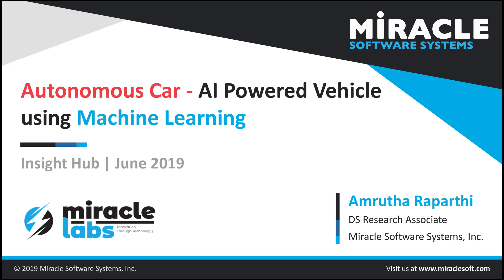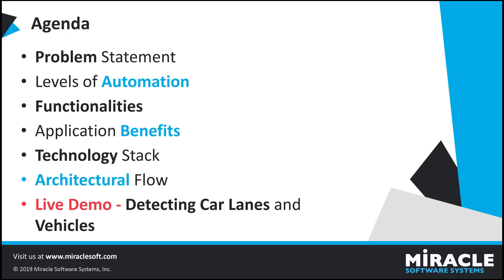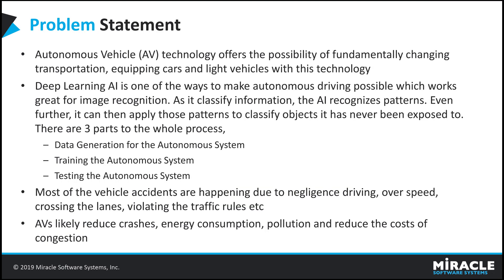Before moving on to the next slide, I would like to talk a little bit about what an autonomous car is. An autonomous car is a vehicle that can guide itself without any human intervention or human input. Here is the agenda: we will be talking about the problem statement, overview on levels of automation and their respective differences, functionalities involved in building this demo, benefits of our application, technology stack, and finally the architecture followed by a live demo.